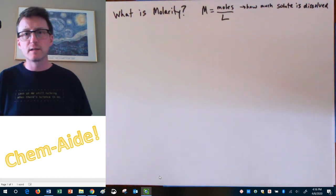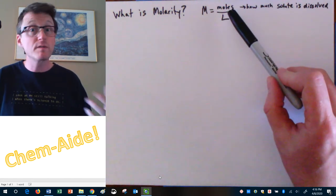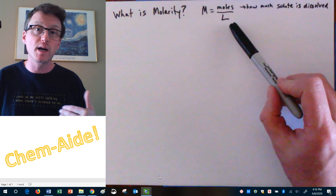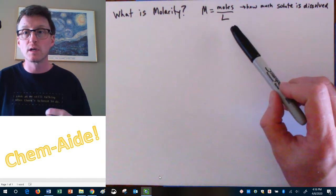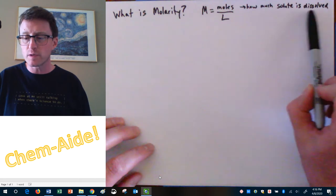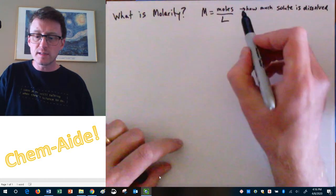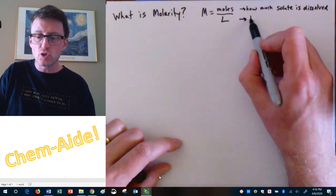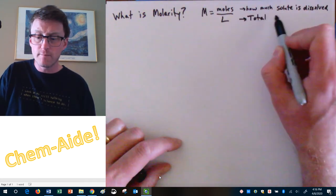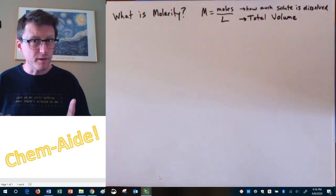Molarity is moles of solute, or moles of things that are dissolved, divided by your liters of solution. Now this is like saying how much stuff was dissolved? That's the moles. And then the liters, this is actually talking about a total volume. Now I got to be careful here.